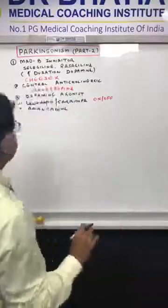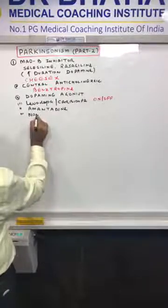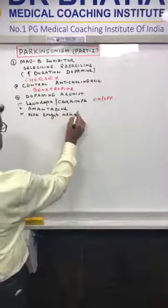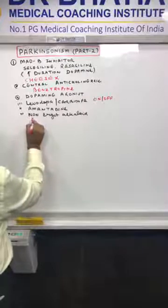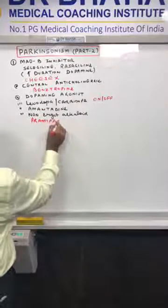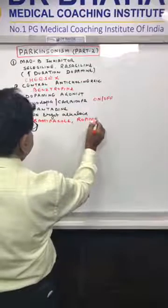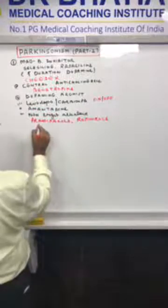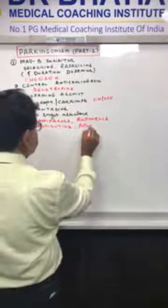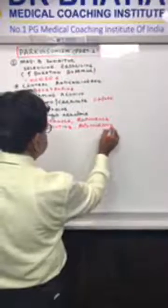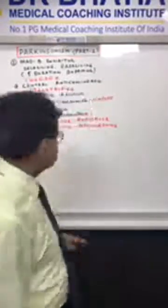The second drug in this category is amantadine, which is also a dopaminergic drug. The third subgroup is non-ergot alkaloids, and these include pramipexole, ropinirole, rotigotine, and recently apomorphine has been added. All of these non-ergot alkaloids have dopaminergic action.